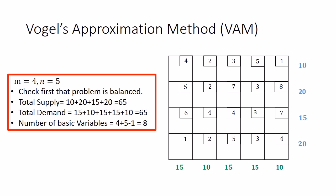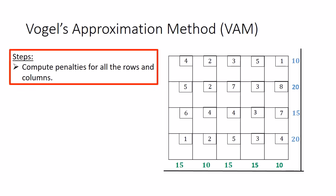Now let's apply Vogel's Approximation Method. The very first step is computation of penalties for all rows and all columns. Write the penalties adjacent to the supplies and below the demands, and draw a line to differentiate between them. For the first row, the minimum cost is 1 and the next highest cost is 2, so the penalty is 1. Similarly, computing penalties for each row, the difference is turning out to be 1 in each row.